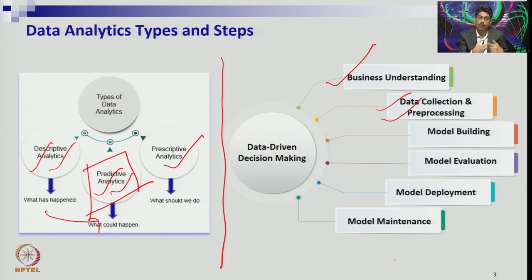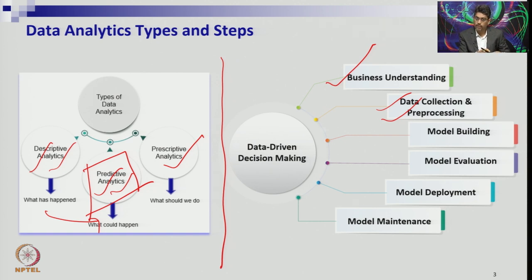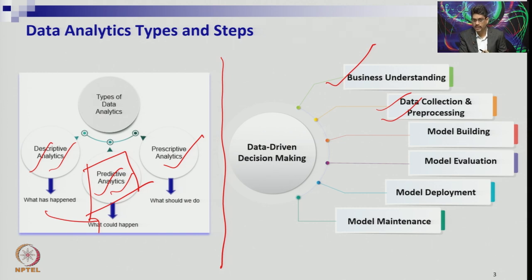In data collection, you identify types of data — primary and secondary — and clean the data through preprocessing, removing outliers. Once you have clean data and understand the data behavior through descriptive analytics and exploratory data analysis, you think about which predictive model or prescriptive model to apply. That is called model building. You can use SQL and different data sources in this process.